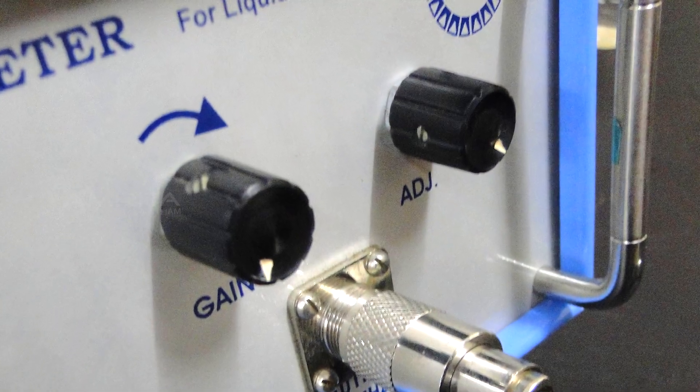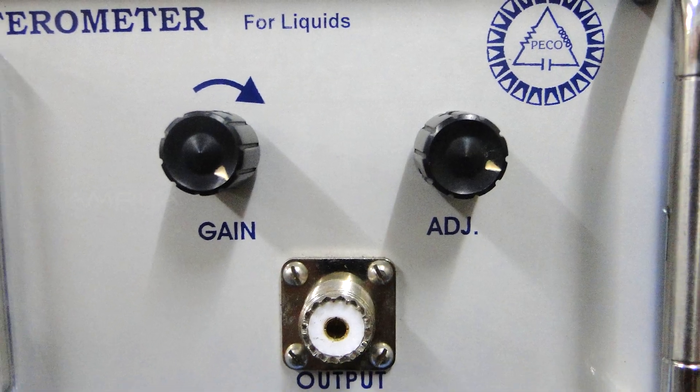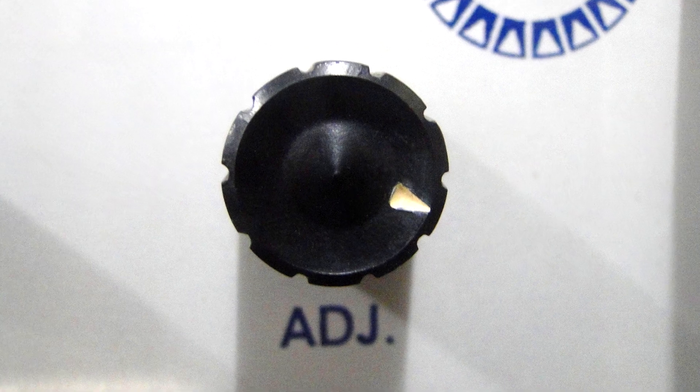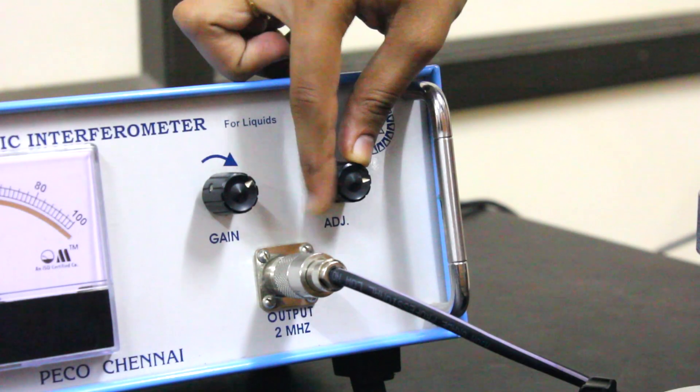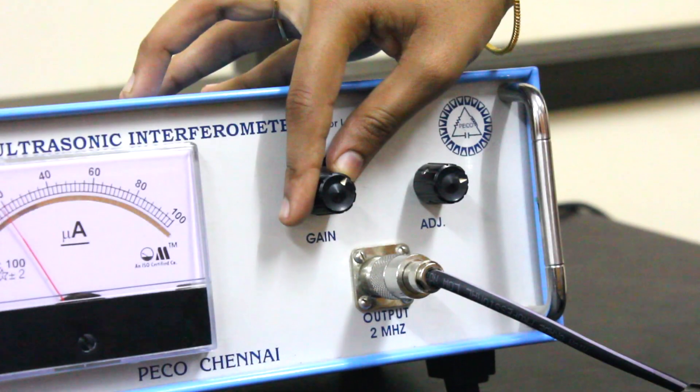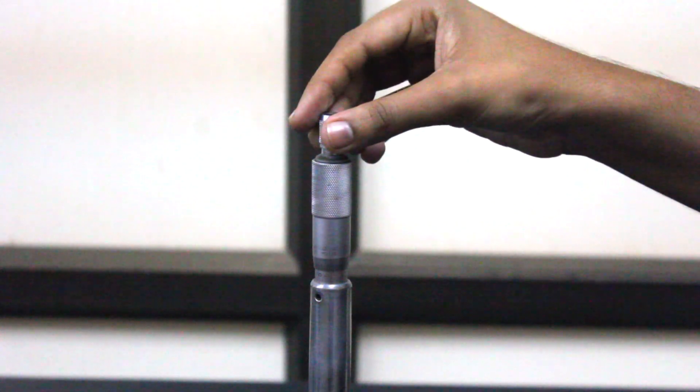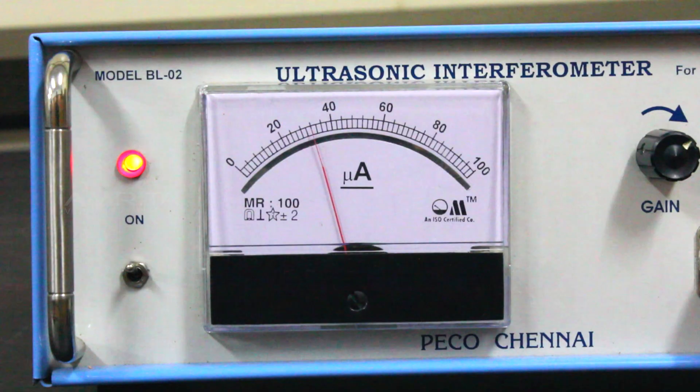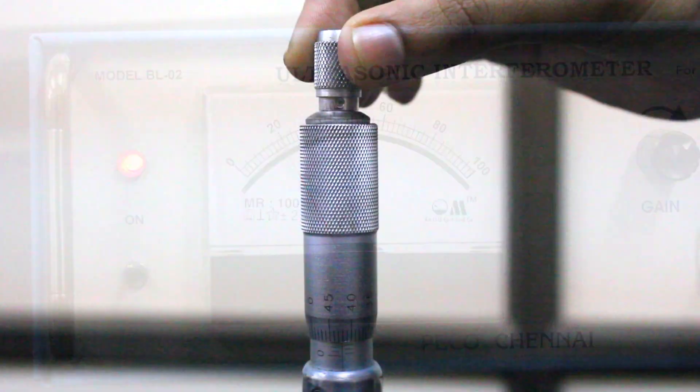There are two knobs on the instrument: adjust and gain. With the adjust knob, the position of the needle on the ammeter is adjusted. The knob gain is used to increase the sensitivity of the instrument. When we move the micrometer, the anode current begins to increase.